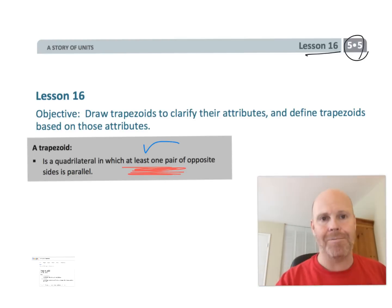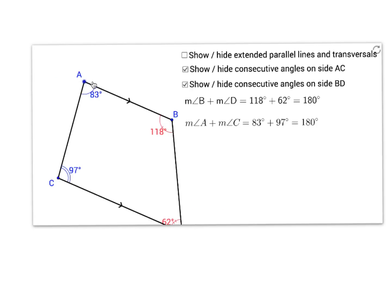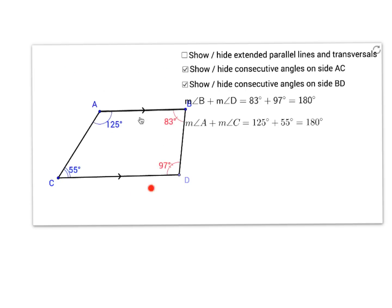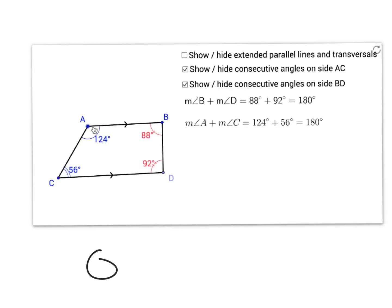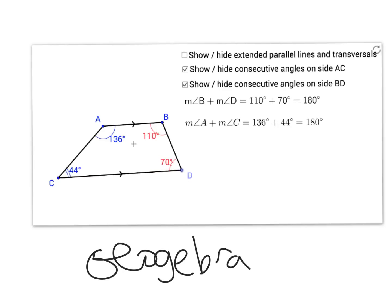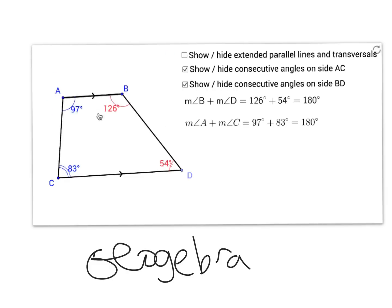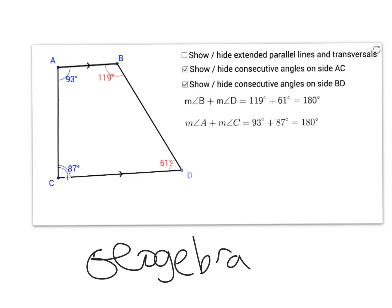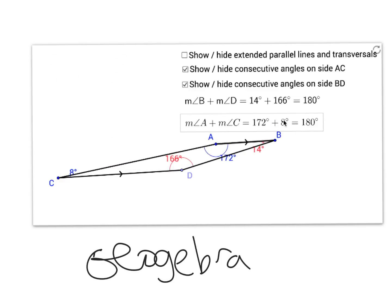I want to show you a really cool thing about trapezoids using GeoGebra — geogebra.org. I've created a trapezoid here, and notice that these two angles have a sum of 180 degrees, and these two angles also have a sum of 180 degrees. Let me randomly make a brand new trapezoid — these two angles still sum to 180, and these two still sum to 180. Let's create the weirdest-looking trapezoid ever — the angles still add up to 180 degrees.